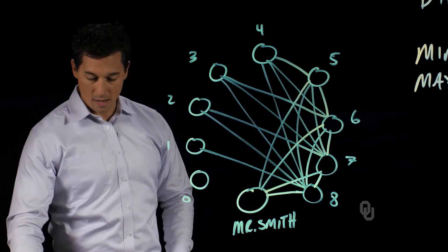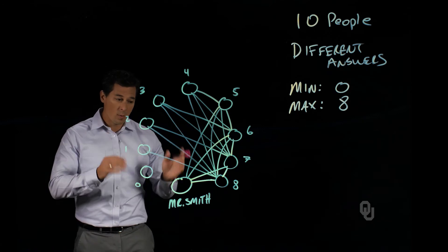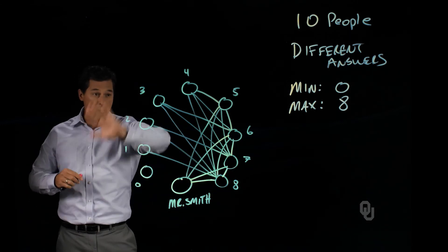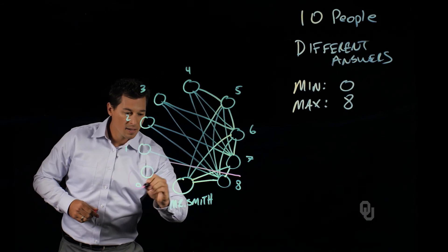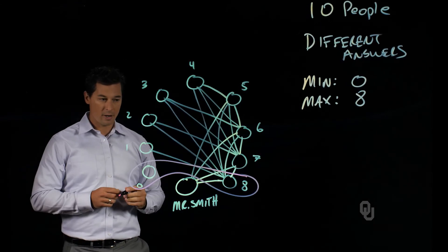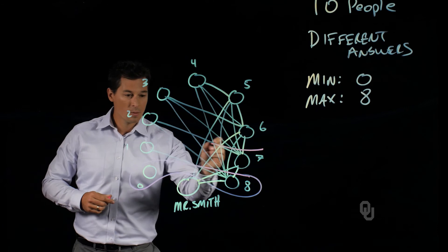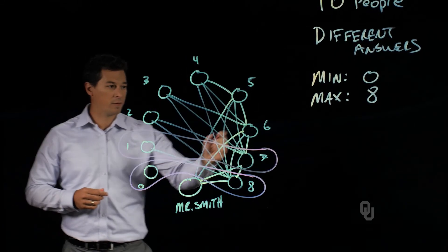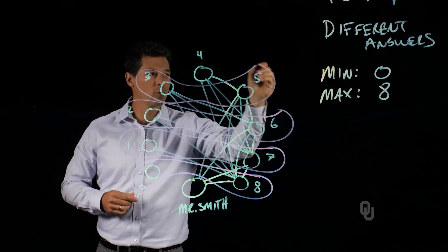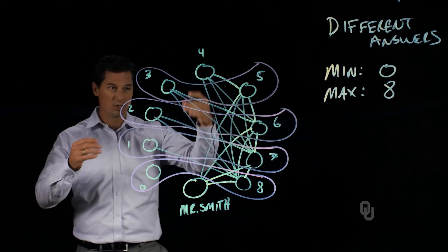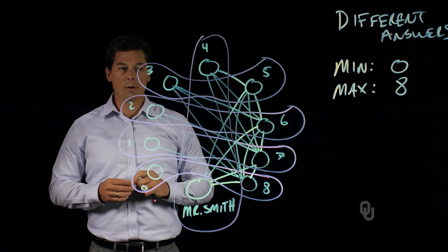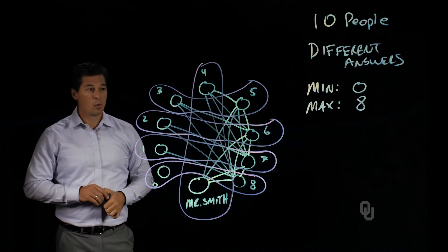Since no one shakes hands with their spouse, person eight must be married to person zero — the only person they didn't shake hands with. Continuing this logic: person seven and person one are married, six and two are a pair, and five and three are a pair. By process of elimination, Mr. Smith's wife — Mrs. Smith — is person number four. So Mrs. Smith shook hands with four people.